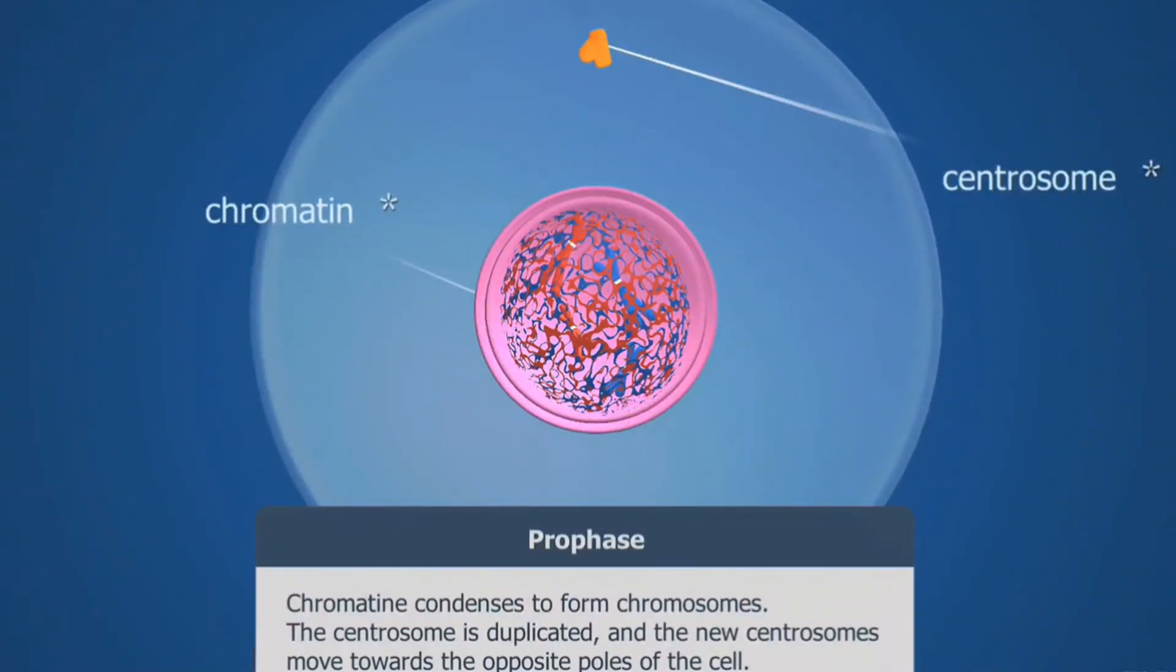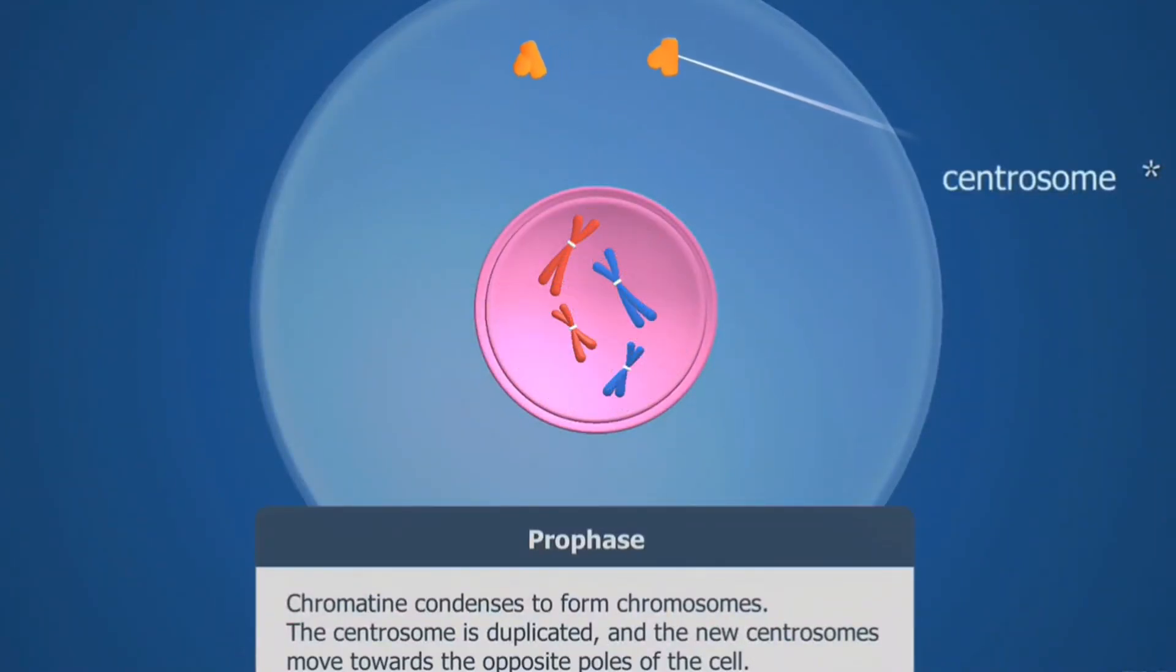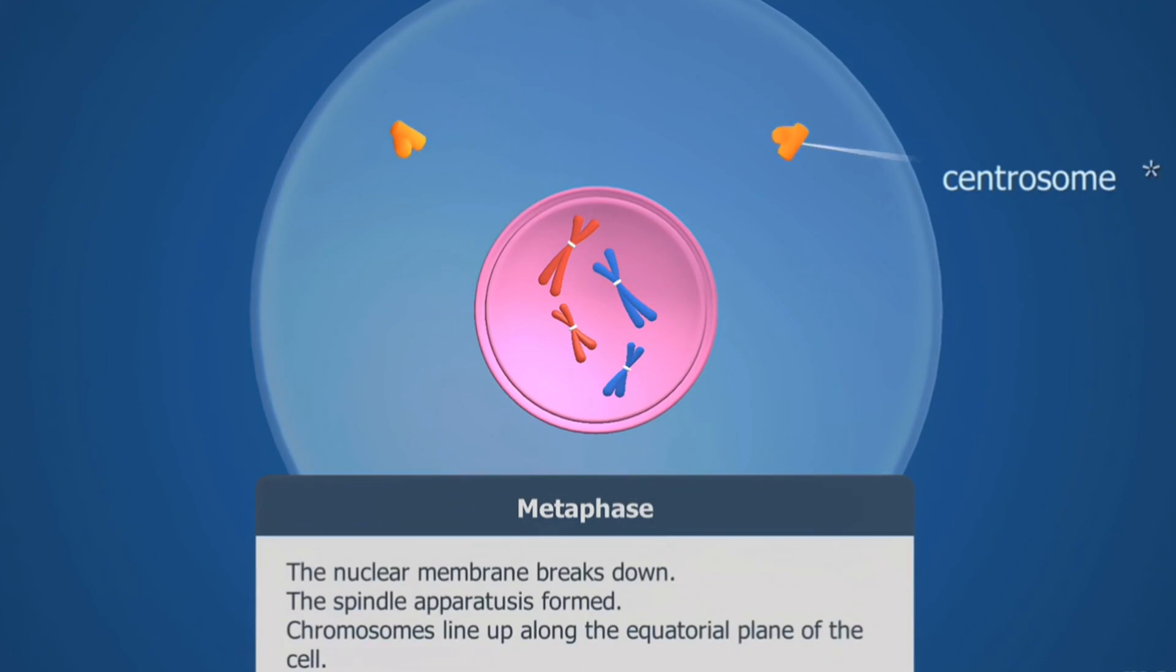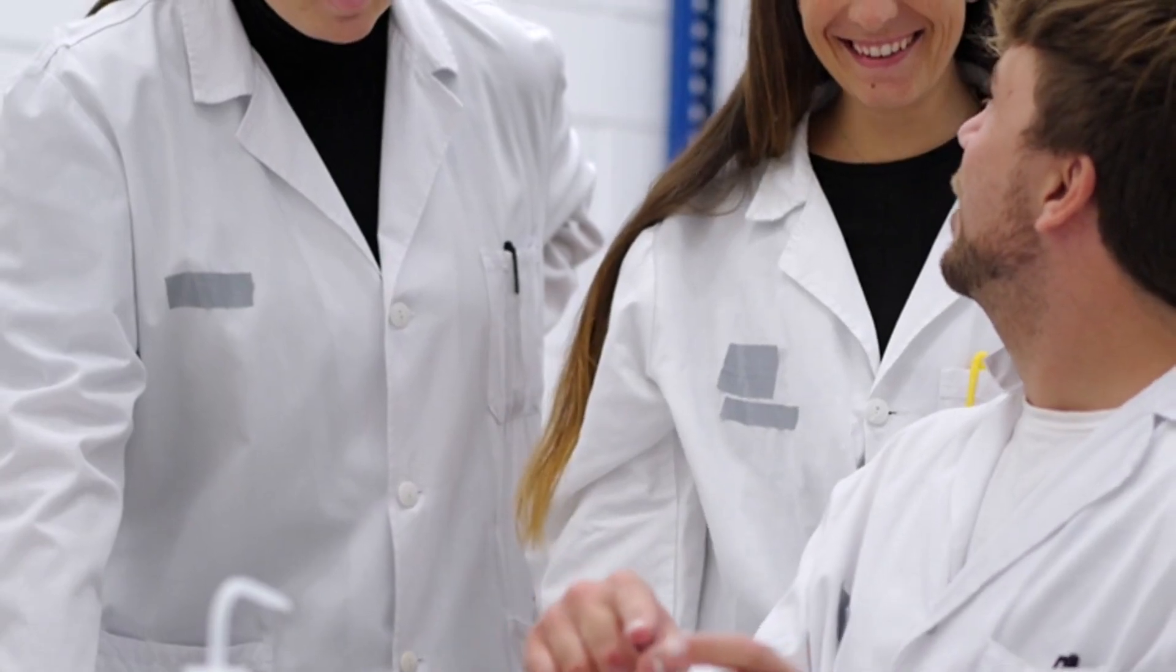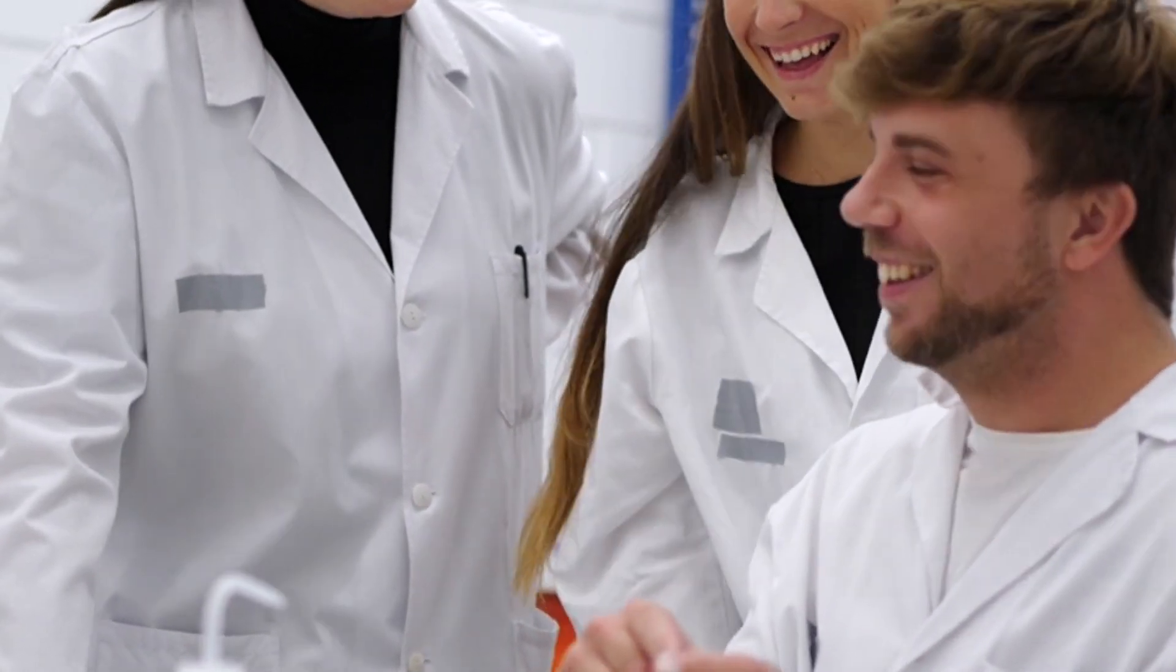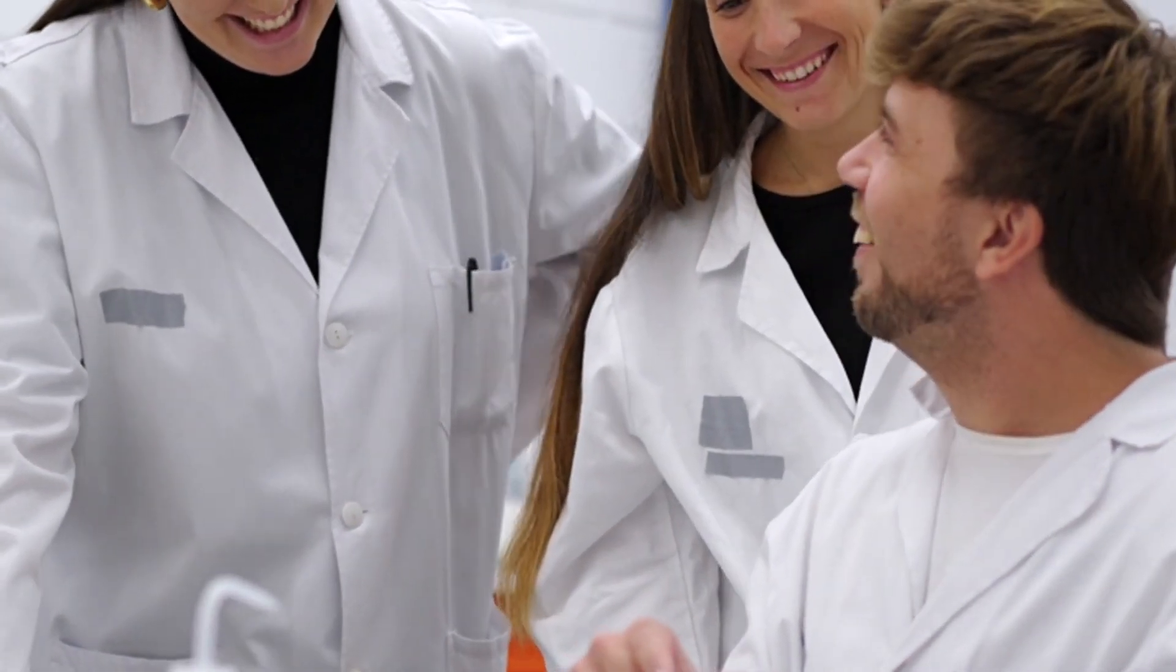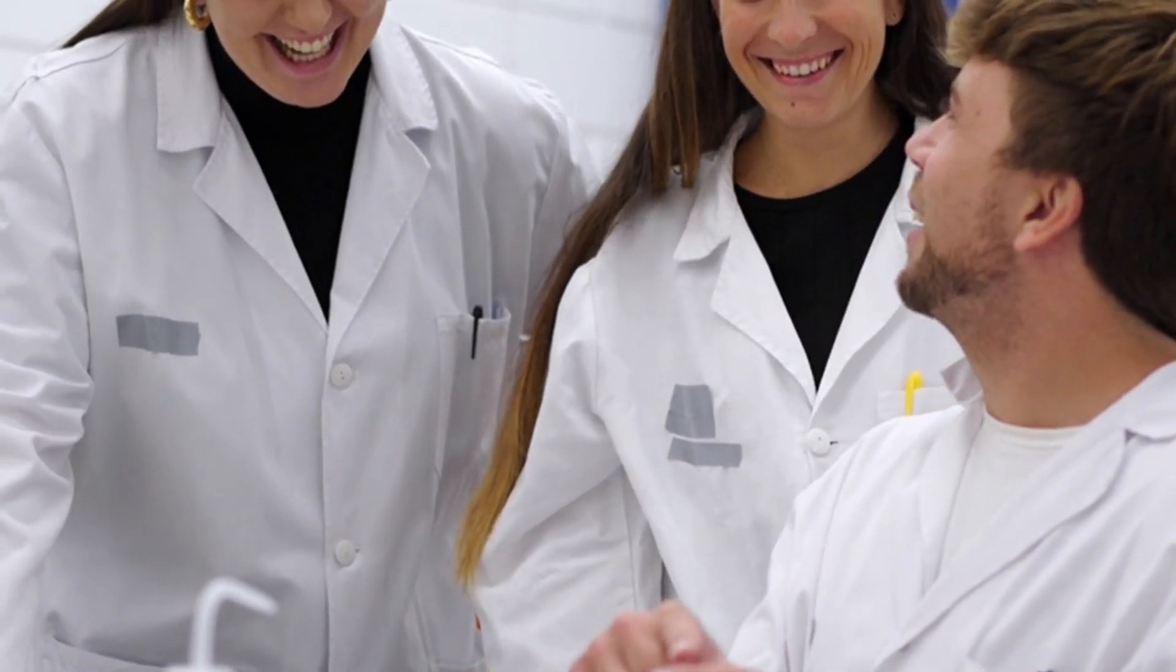Later contributions by other scientists, such as Matthias Schleiden, Theodor Schwan, and Rudolf Virchow, further solidified the principles of cell theory and established it as a cornerstone of biological sciences. Their collective efforts underlined the importance of cells and led to advancements in fields such as genetics, medicine, and biotechnology.